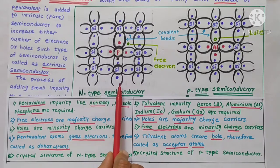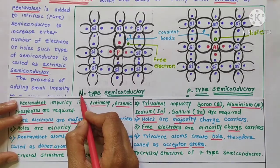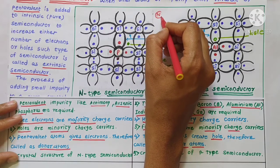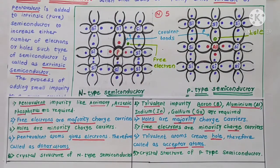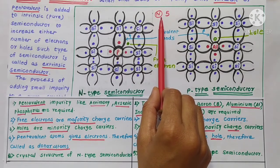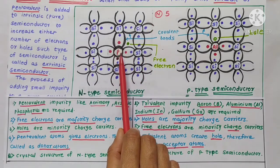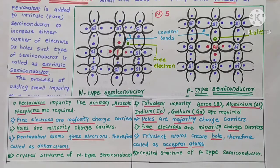In N-type, pentavalent impurity is added. Here is a memory tip: if you write the letter N in reverse order, it looks like the number 5. So remember that in N-type semiconductor, pentavalent impurities are added. If you remember that, then you automatically know that in P-type, trivalent impurities are needed.